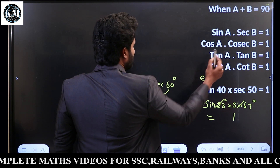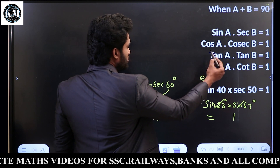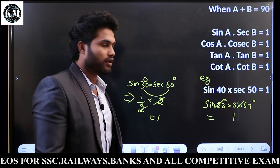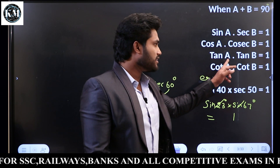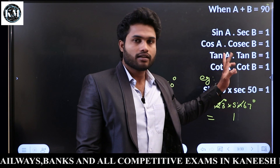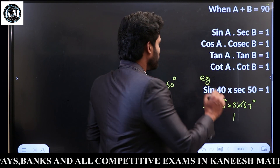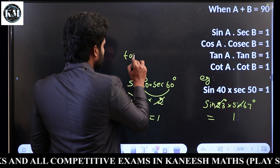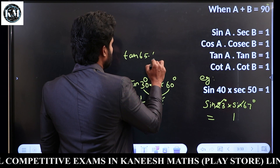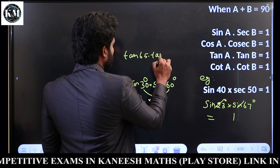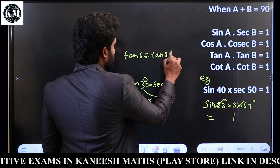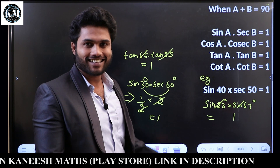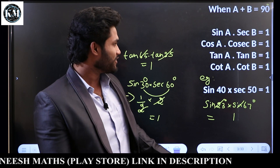Tan A × Tan B. For example, Tan 45 × Tan 45, or Tan 30 × Tan 60 equals 1. Also Tan 65 × Tan 25 equals 1. So that is clear. Next.